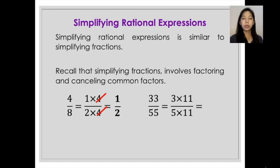Another example is 33 over 55, wherein this can be factored out into 33 becomes 3 times 11, 55 becomes 5 times 11, and 11 is their common factor, so cancel that out, and you now have 3 over 5, which is the simplest form.